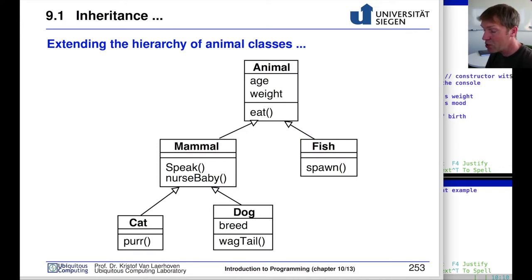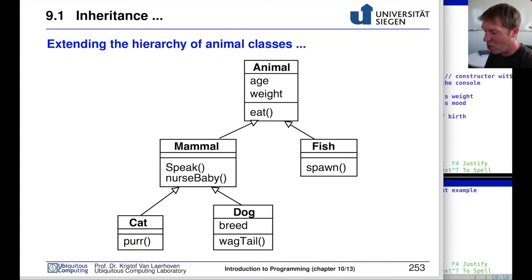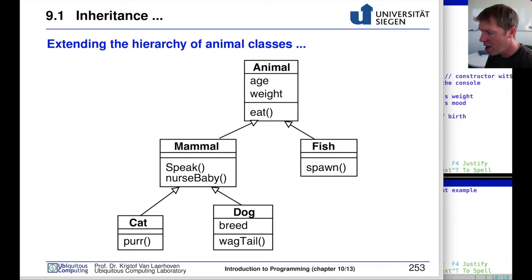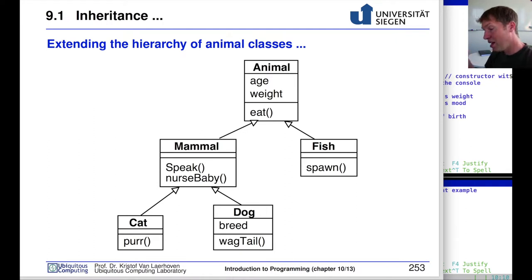This goes on multiple levels. A mammal can itself inherit several things from an animal, and this can continue indefinitely. You can have many different animals, different living creatures, different objects, all inheriting from a base class. Because this can go on across many levels — effectively an infinite number of levels — we talk here about a hierarchy.